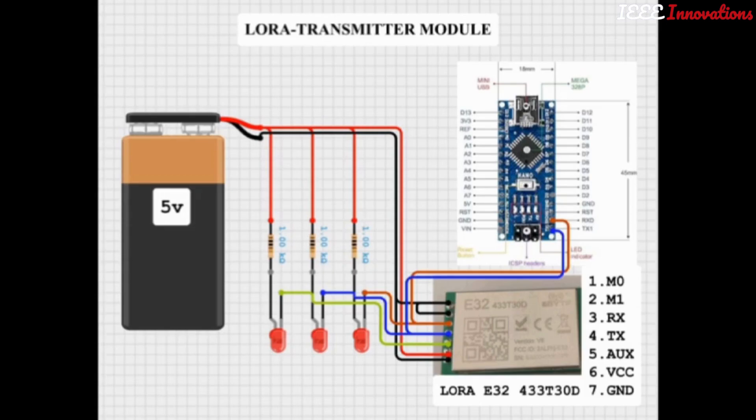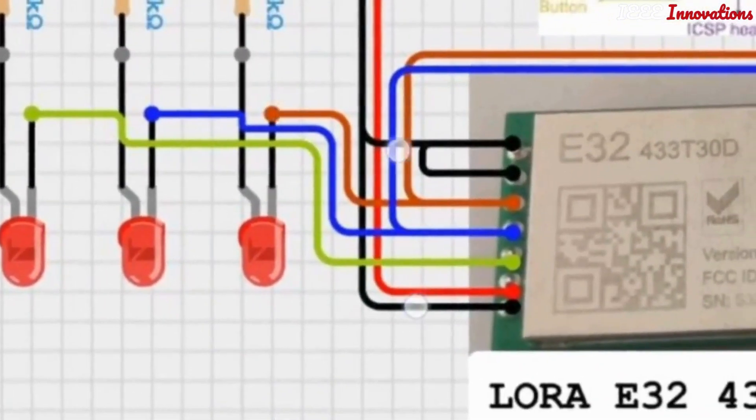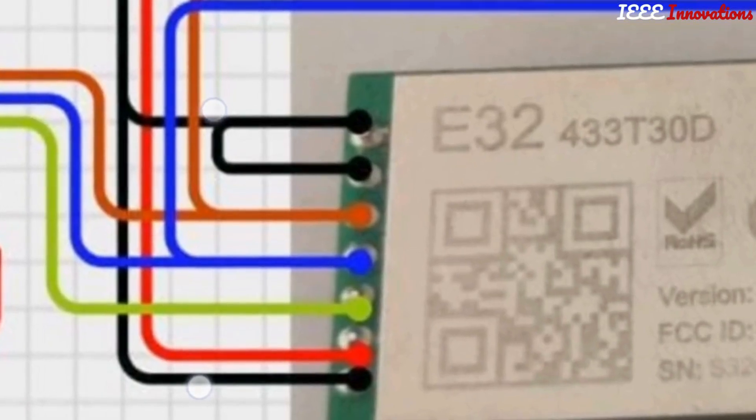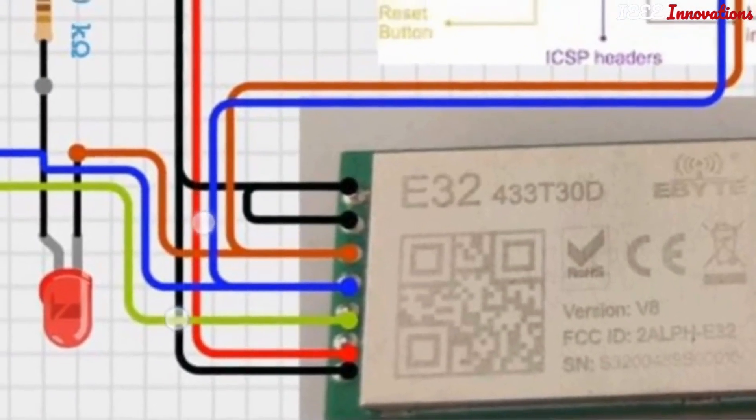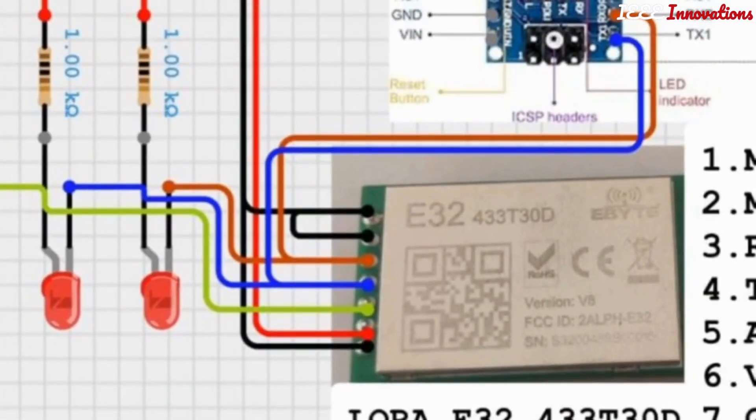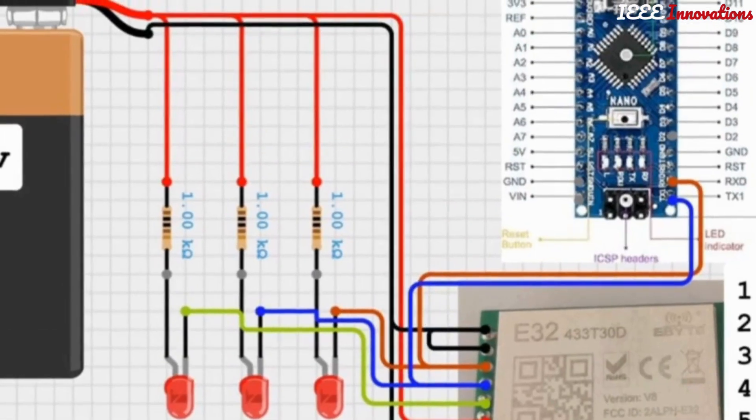Here, AUX indicates whenever it is low, this LED will be high. If it is high, this will get busy. While transmitting the data, AUX will go low. This is active low, so we designed this LED to turn off only when transmitting.